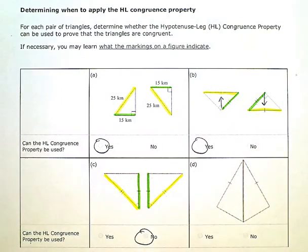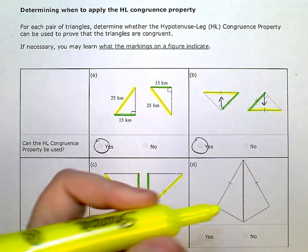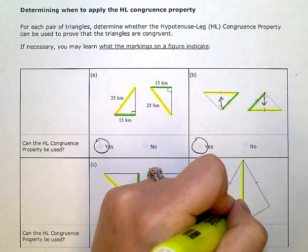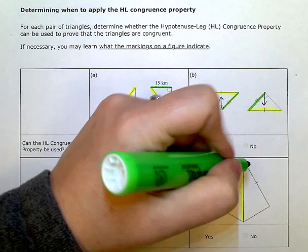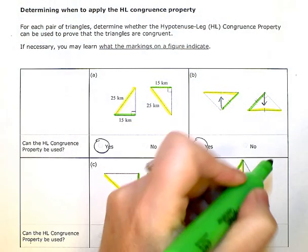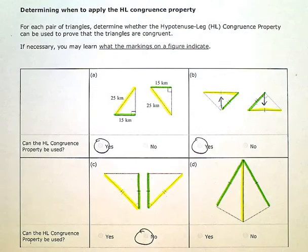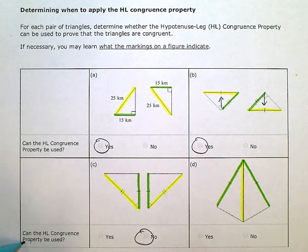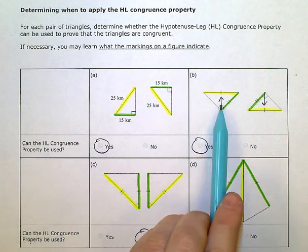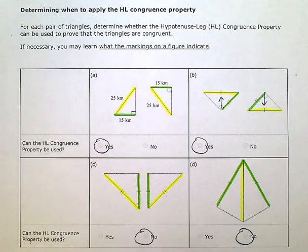The last one: the triangles share a leg, so that side must be congruent in both triangles. Another pair of sides is also marked congruent, but I have the same problem — I don't know if these two triangles are right triangles. To use the hypotenuse leg property, I have to be dealing with right triangles as in the first two problems. So this one is also no, even though I do have two pairs of corresponding sides that are congruent.